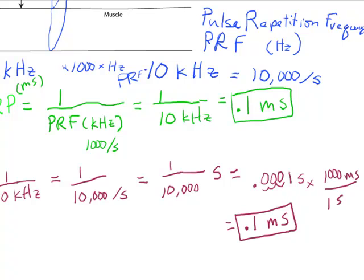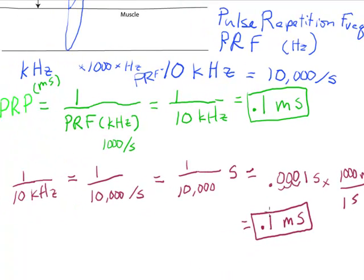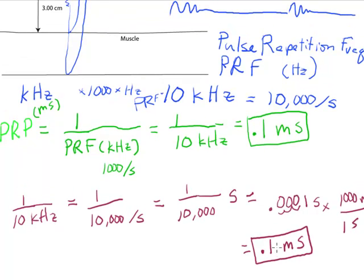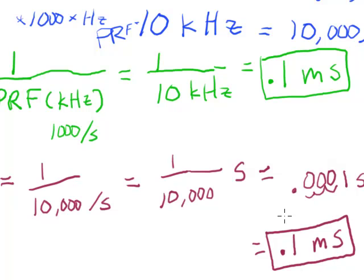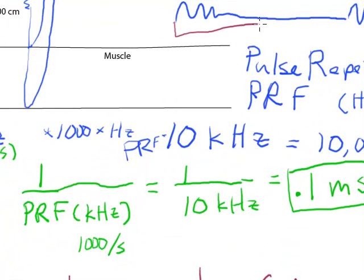So the period, so every tenth of a millisecond, it's going to be emitting a pulse. So that's a very short amount of time. And so it's going to emit a pulse every tenth of a millisecond. It'll be emitting a new pulse. So this total duration right here, from the beginning of this pulse to the beginning of the next one, the length of time for that whole duration is 0.1 milliseconds.